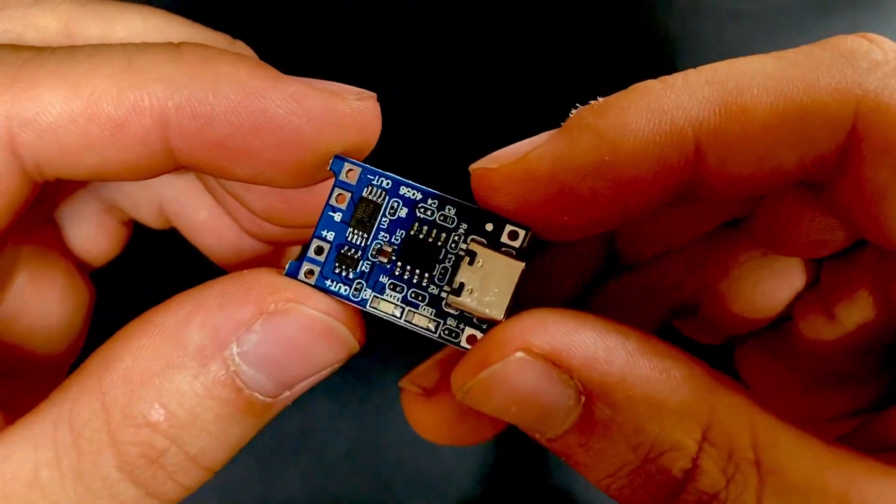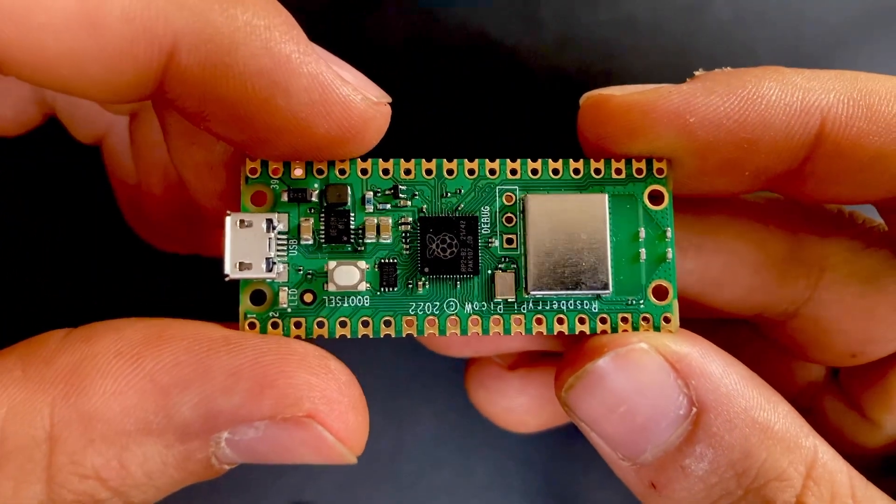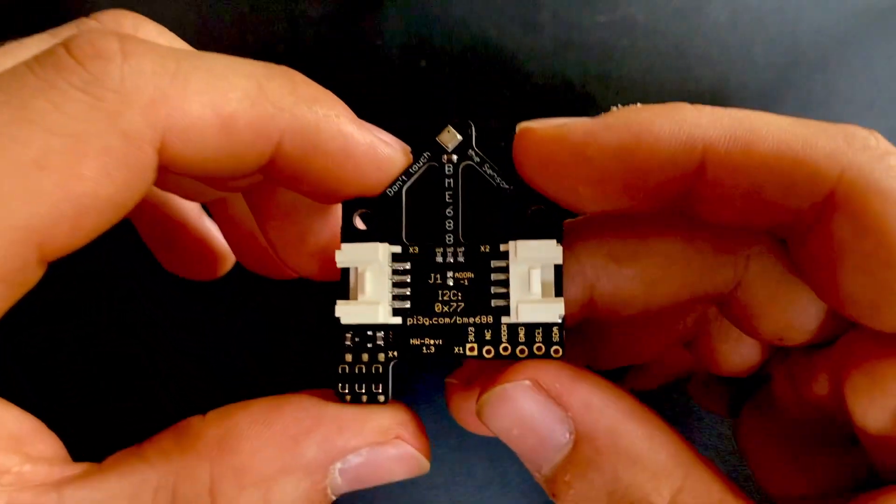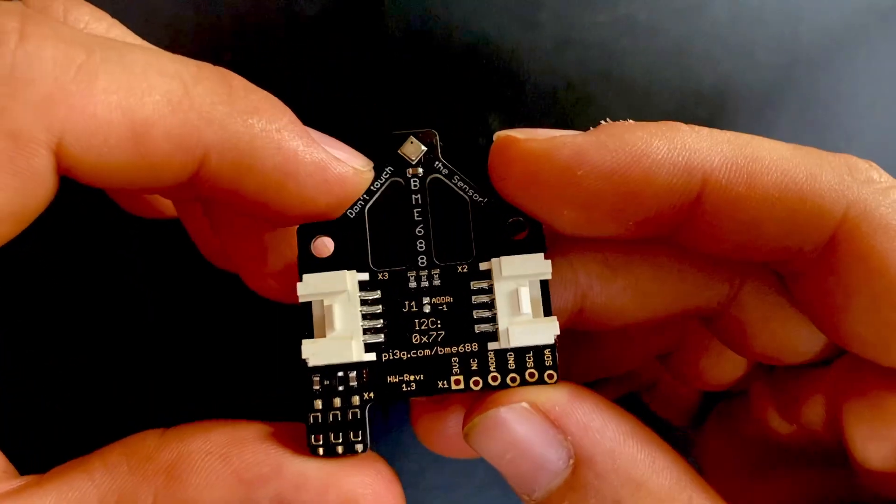A DP4056 module will be responsible for protecting the battery and powering the Pico W. And finally, we need a BME688 breakout board or any other environmental sensors to track the weather data.